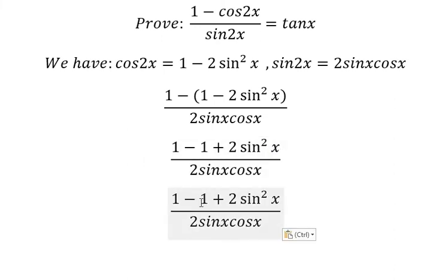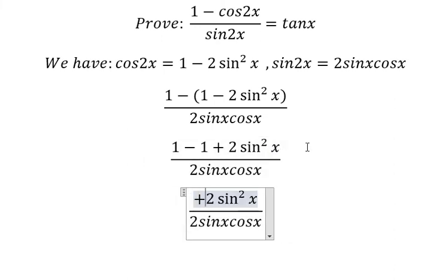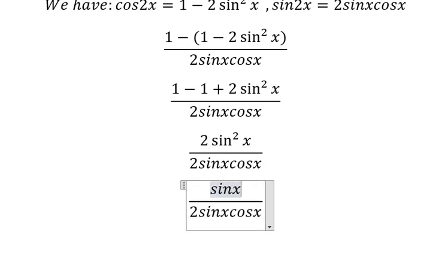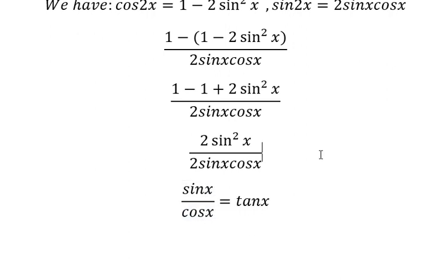1 minus 1 we cancel. We need to simplify 2 sine squared x on numerator and denominator.